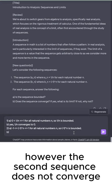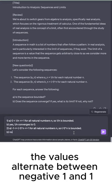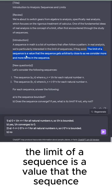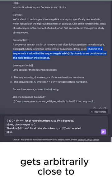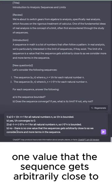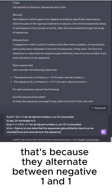However, the second sequence does not converge specifically because the values alternate between negative 1 and 1. If we look at the definition of the limit of a sequence, the limit of a sequence is a value that the sequence gets arbitrarily close to. So from the definition, there is no one value that the sequence gets arbitrarily close to as we consider more and more terms in the sequence. That's because they alternate between negative 1 and 1.